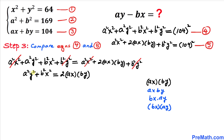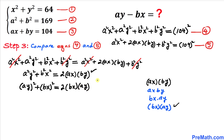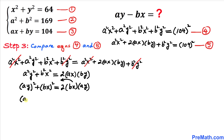Now a²y² can be written as (ay)², and b²x² as (bx)², so the left-hand side becomes (ay)² + (bx)² = 2·bx·ay. Moving the right-hand side to the left, we get (ay)² + (bx)² − 2·bx·ay = 0.